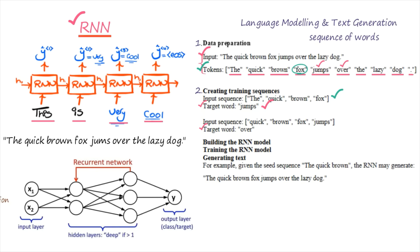Whenever you are going to create language modeling, first take the text, then divide it into tokens. From these tokens, you selectively create training samples. Each training sample will have its own tokens as well as the target word. Target word means: after this token, what is the word that we are expecting? This is how we will create our training sequence.